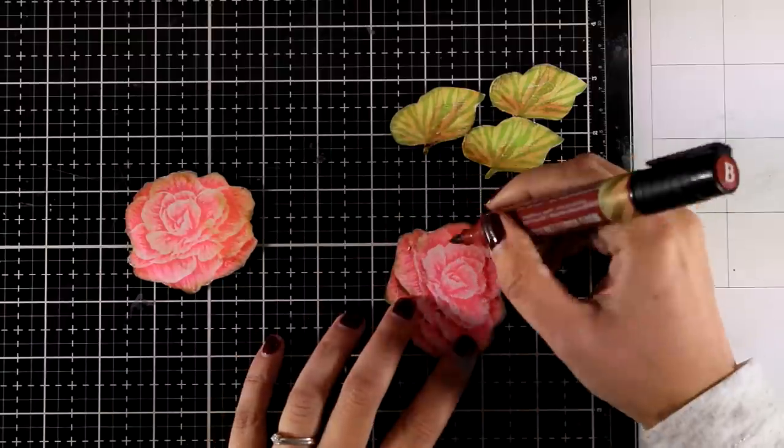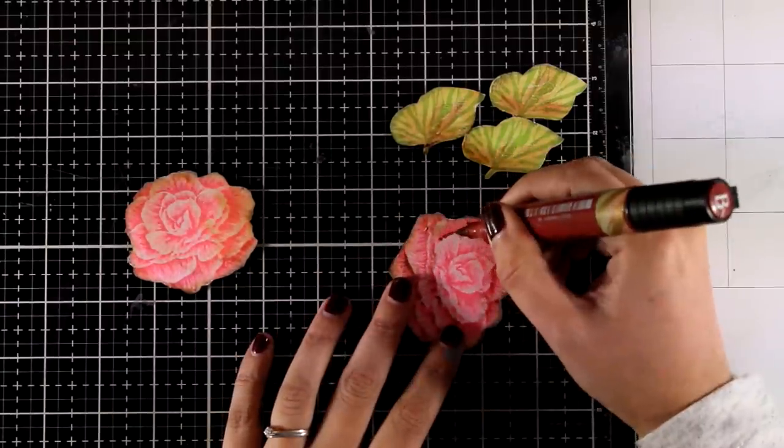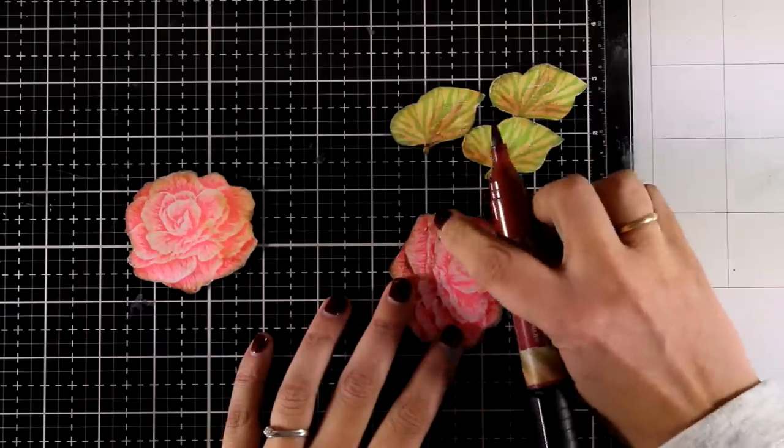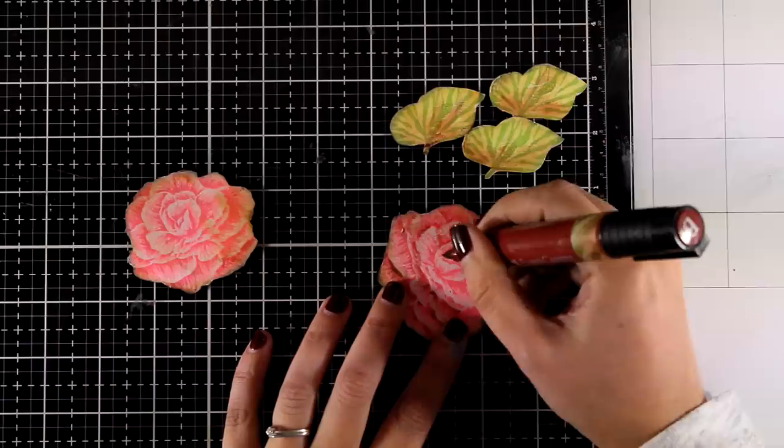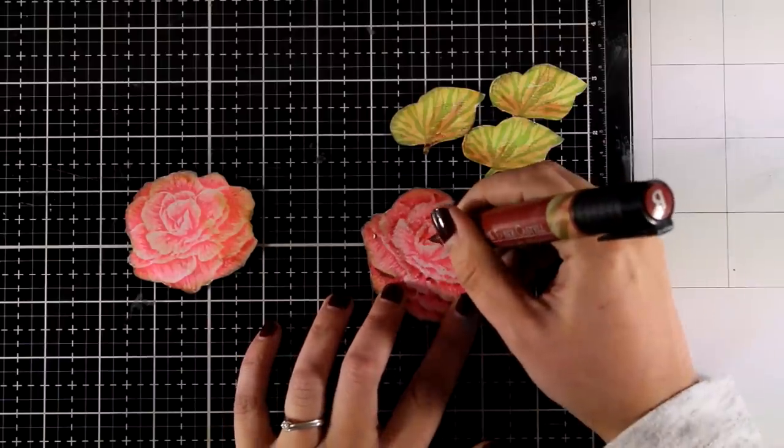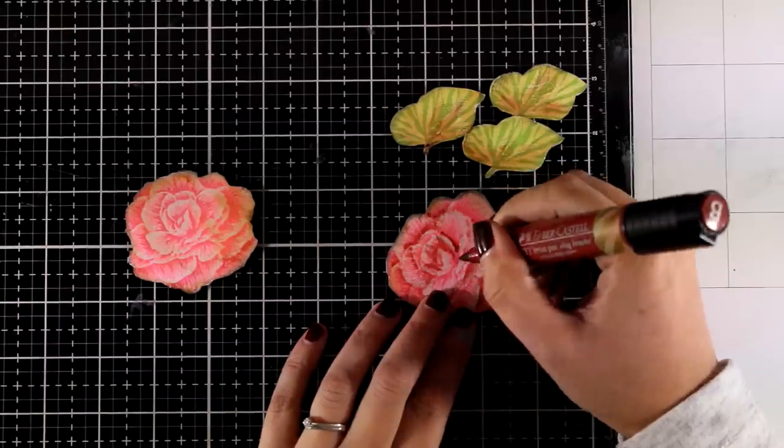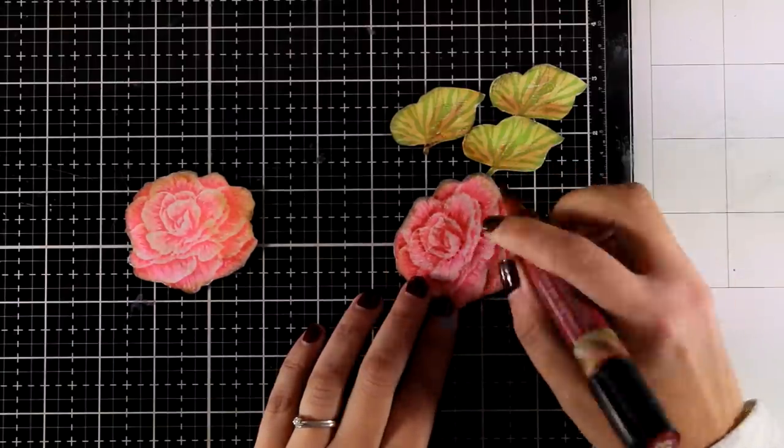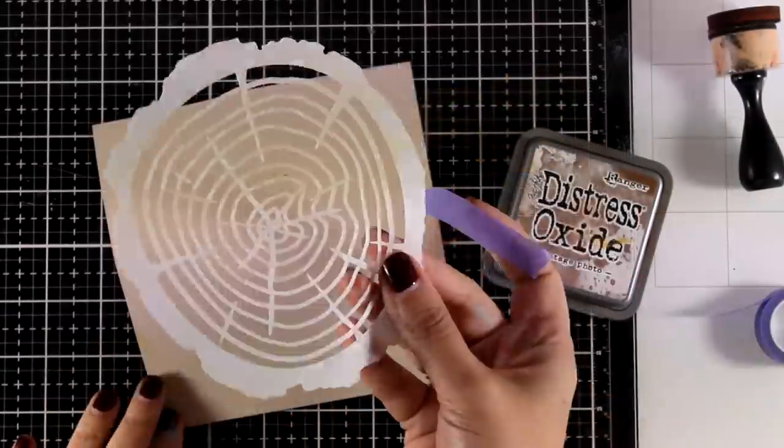And as I finish this flower you can see it in comparison with the one next to it. This really is dimensional. So I will repeat the same process on the other one. Now I am going to play with a stencil.